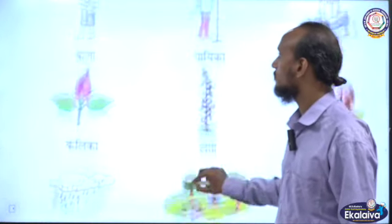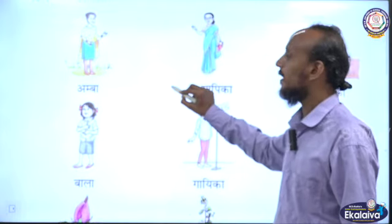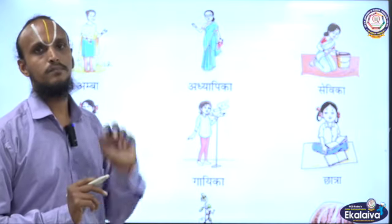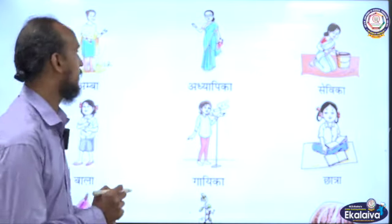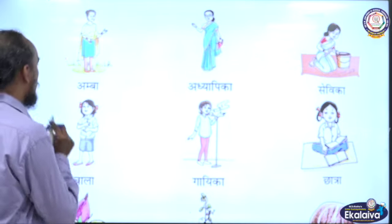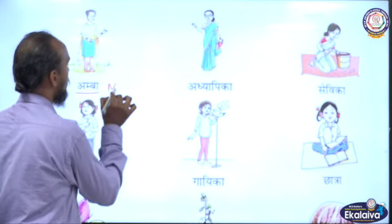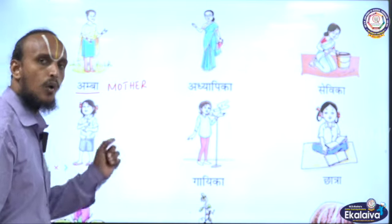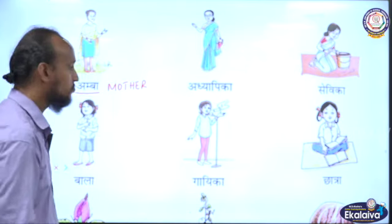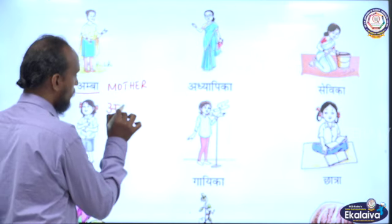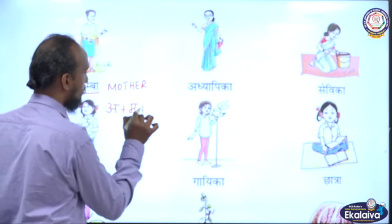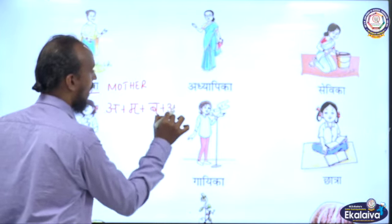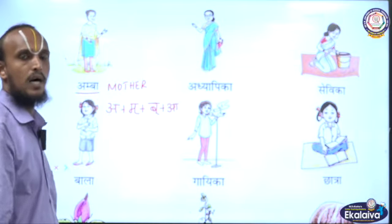The first word is Amba, which means Mother. You know pretty well how to split the word. How to split the word Amba? Listen here: Amba is split as Am + ba, which is equal to Amba.